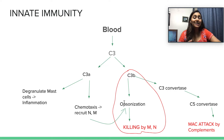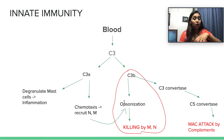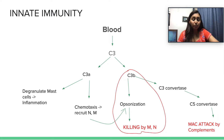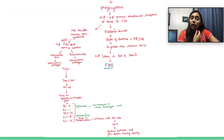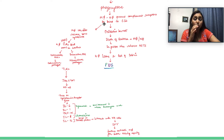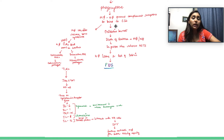The second thing C3B can do is opsonization — simply making the bacteria more appetizing for macrophages and neutrophils to come and eat. Think of C3B as adding a lot of mayo or ketchup to a sandwich, making it more tasty for the macrophages and neutrophils. They will bind to the C3B receptors to hook onto the bacteria and then phagocytose them.